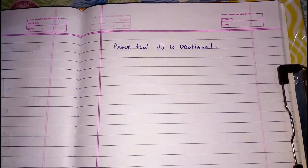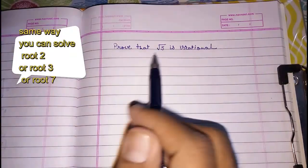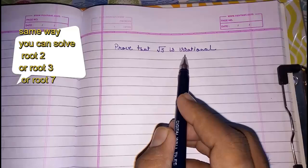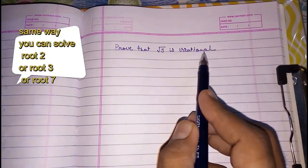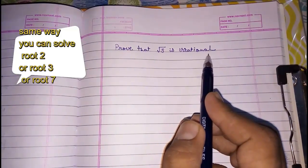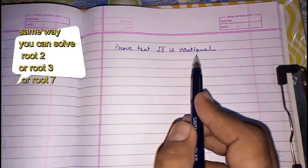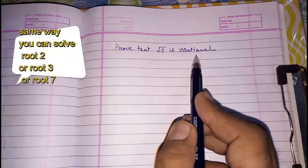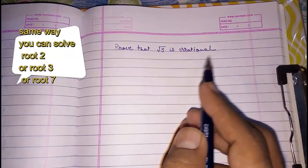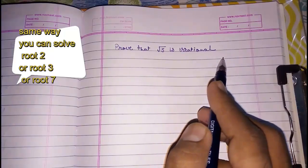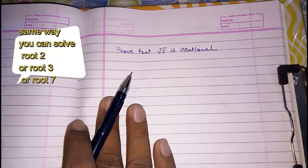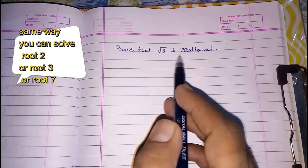Hello friends. Today we are going to prove that root 5 is an irrational number. First of all we should know what is the definition of irrational number. There is no such proper definition for irrational numbers. Actually we say that the numbers which are not rational are called irrational numbers. So here also we are going to prove something like that only.